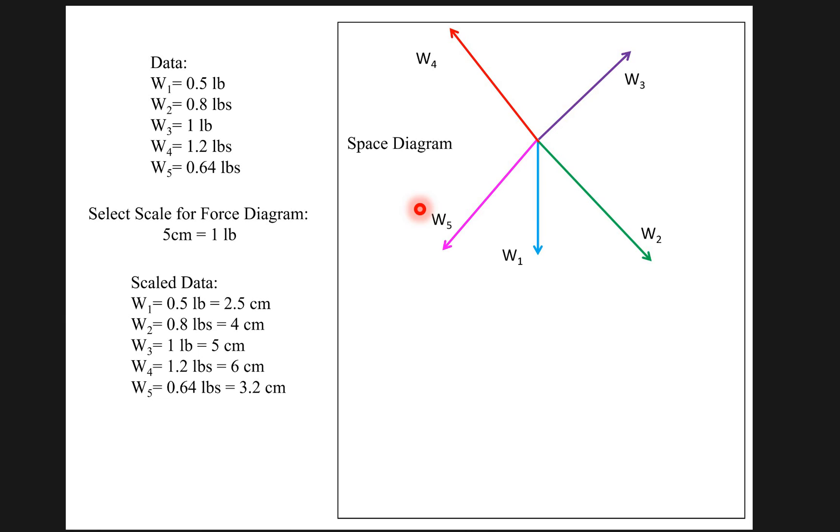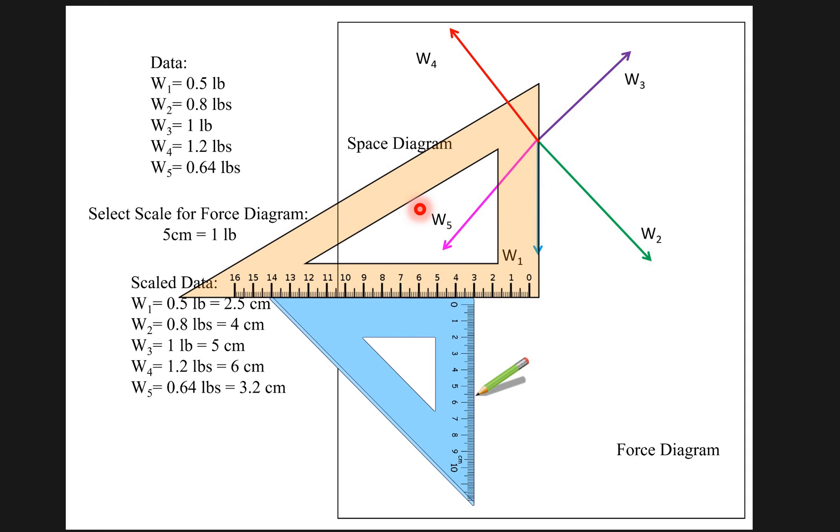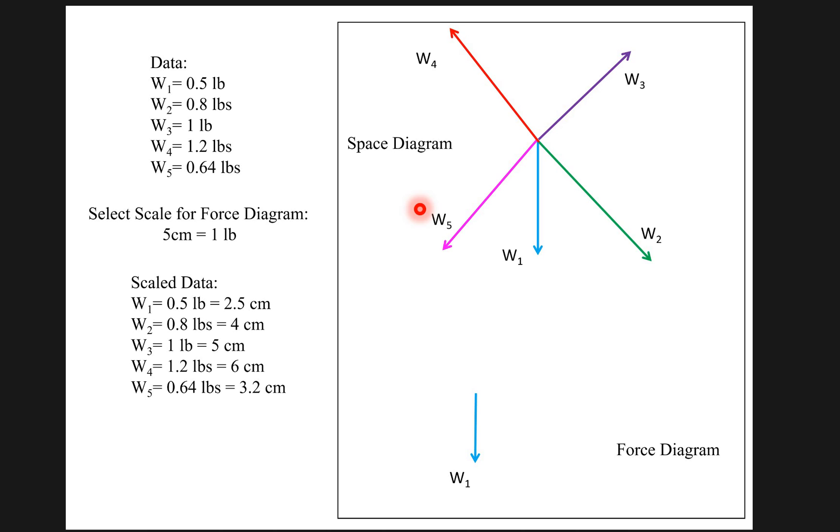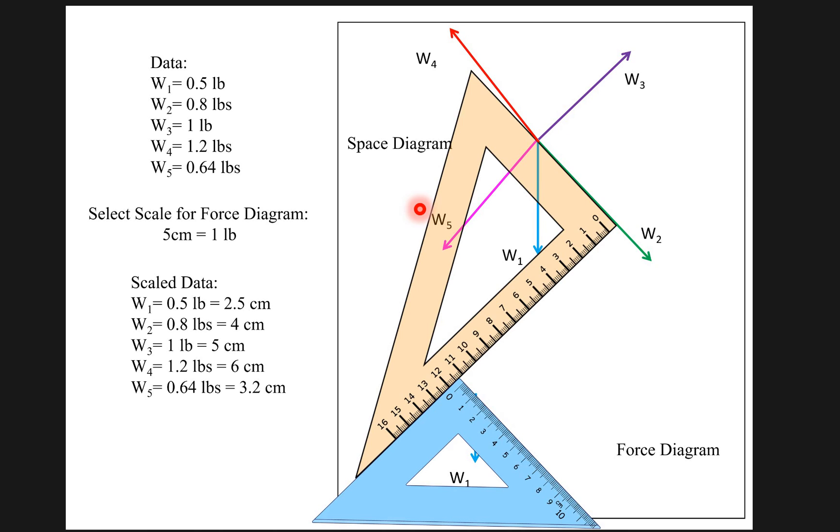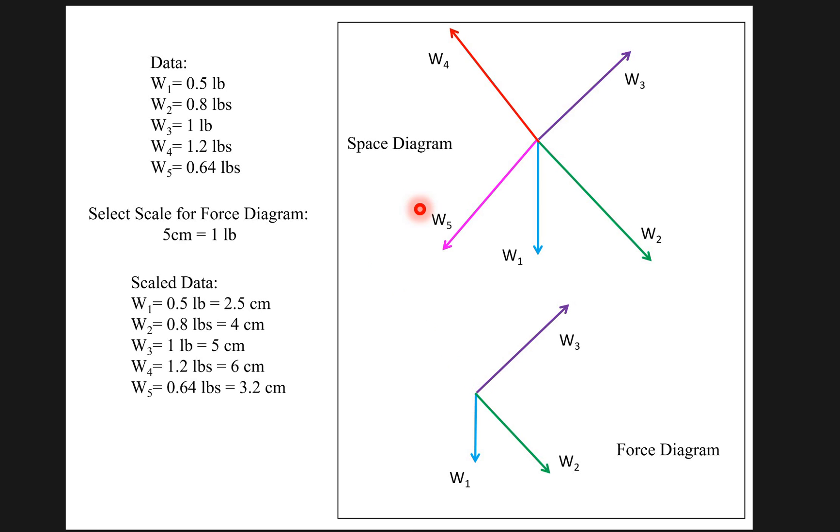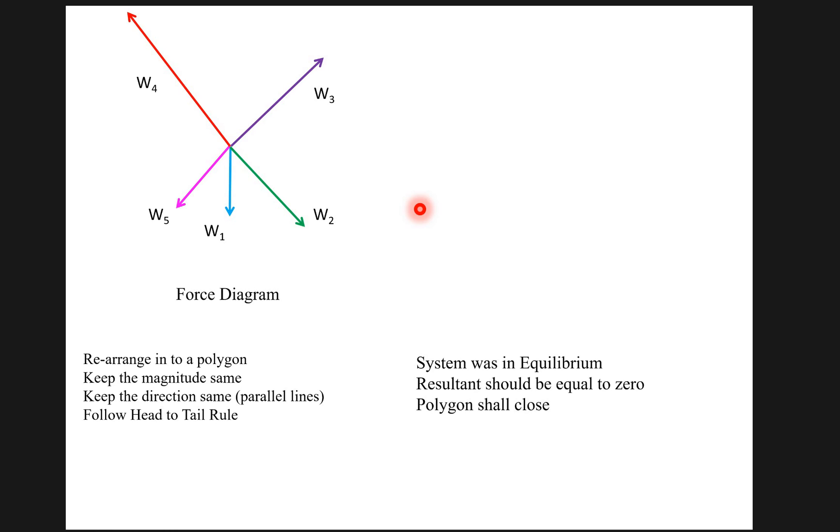This is the data which I got from the first reading. Then the data is scaled in the second step and from the space diagram, the force diagram is obtained by means of set square. After the scaled force diagram is complete, you have to rearrange all the forces in the form of a polygon from the scaled force diagram, keeping the magnitude and direction of the forces same. In case the polygon does not close, it means there is an error in the apparatus due to friction in some parts of the pulleys as I mentioned earlier.